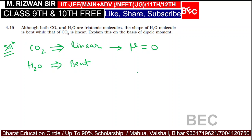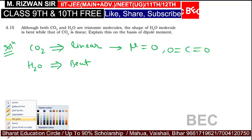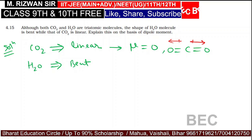If we draw the structure of CO2, the dipole moments are in opposite directions. So, the dipoles are cancelled.